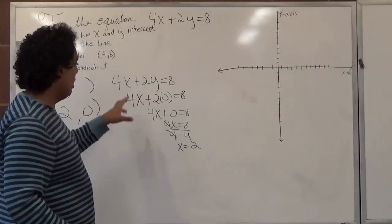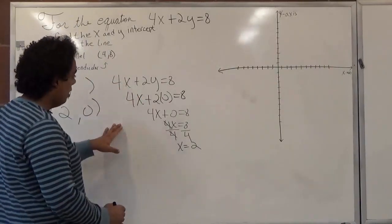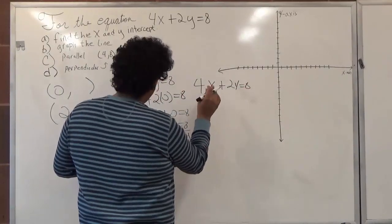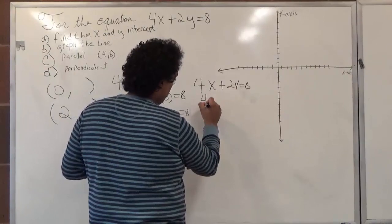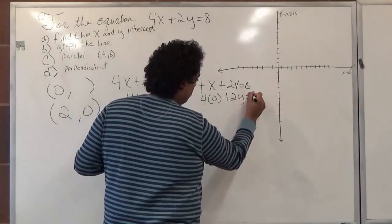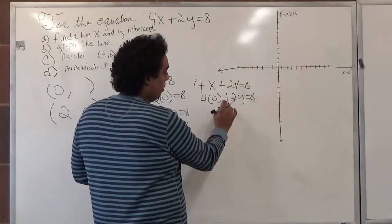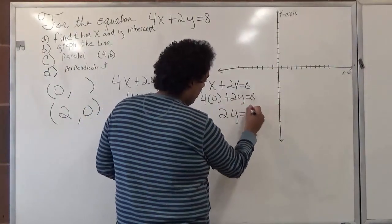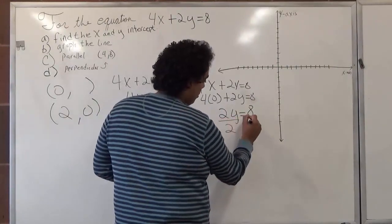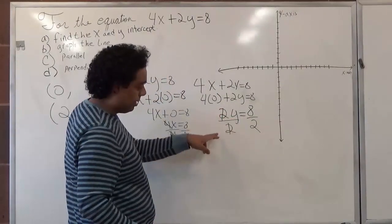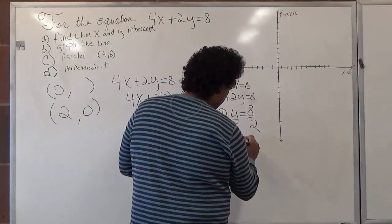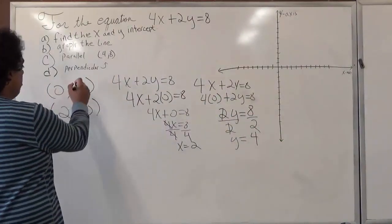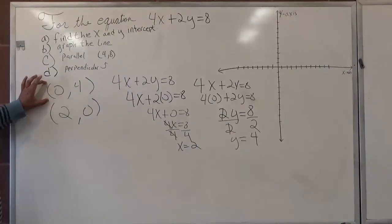We can do the same now and solve for our y intercept. I'll do it right here, right next to it. 4x plus 2y equals 8. If x is equal to 0, what does y equal? So 4 times 0 plus 2y is equal to 8. 4 times 0 is equal to 0. We're left with 2y equals 8. So divide by 2 and divide by 2. 2 divided by 2 is equal to 1, and 1 times y is just y. So y is equal to 8 divided by 2, which is 4. So we've got (0, 4). So this is our y intercept, and this is our x intercept.